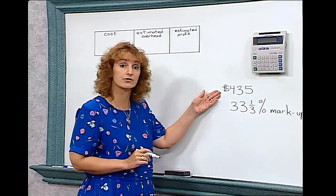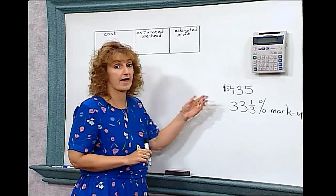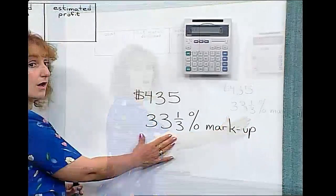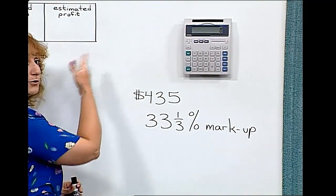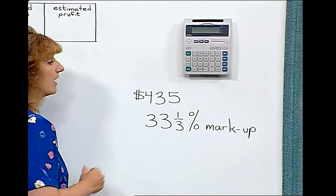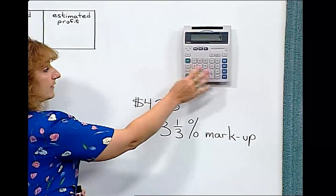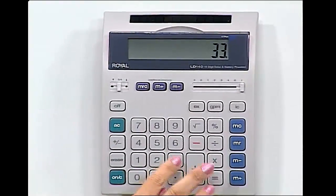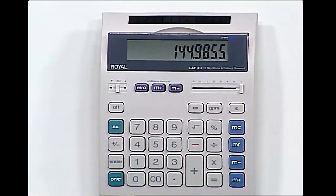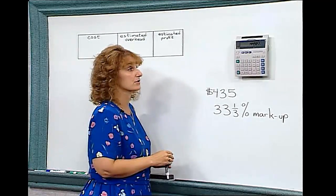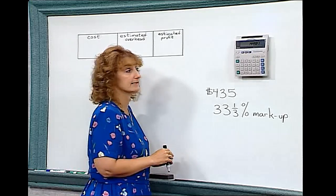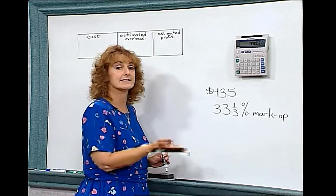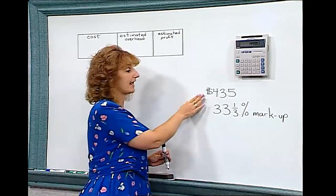We know that the refrigerator cost four hundred thirty-five dollars and that the owner of Adams Store would like to mark it up thirty-three and one-third percent. A markup means the price is going to increase to you as the consumer. Going to the calculator, we put in four hundred thirty-five dollars times the thirty-three percent markup, and we find that they're going to mark up the price one hundred forty-four dollars and ninety-nine cents. Remember, when we talk about money we need to round off.